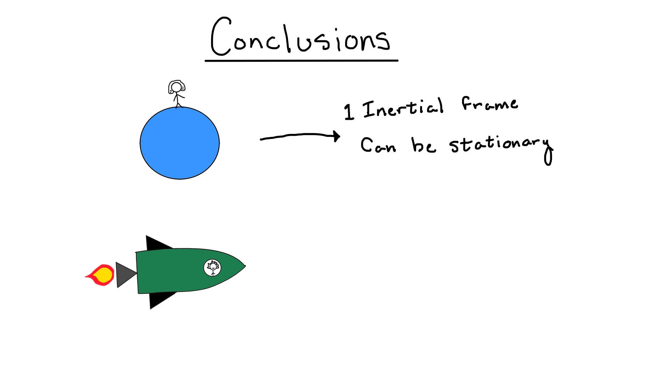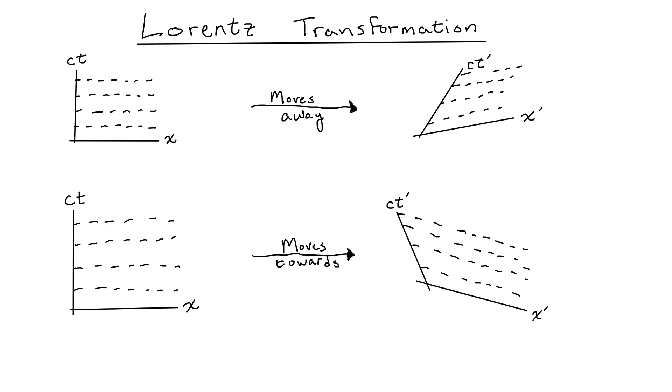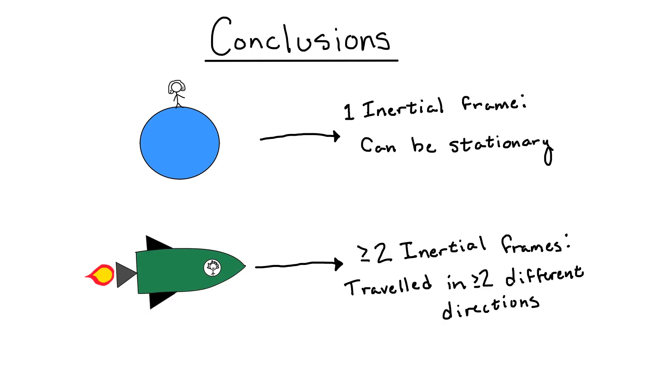However, since we had to perform two different Lorentz transformations to describe Albert's experience, one when he is moving away from Isaac and one when he is moving towards Isaac, we know that Albert's trajectory consists of at least two different inertial reference frames.